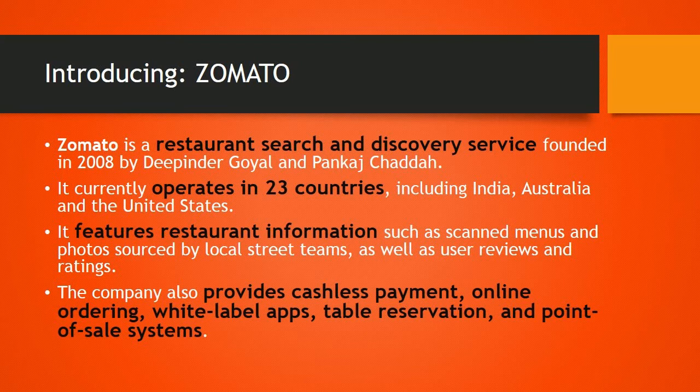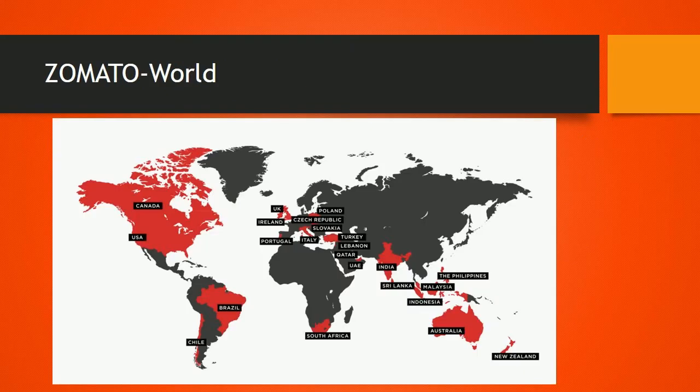Currently, it is operating in 23 countries. Zomato, apart from featuring restaurant information, also provides a platform for the restaurants to advertise themselves. It also provides services like online ordering and table reservations. This picture depicts the global presence of Zomato.